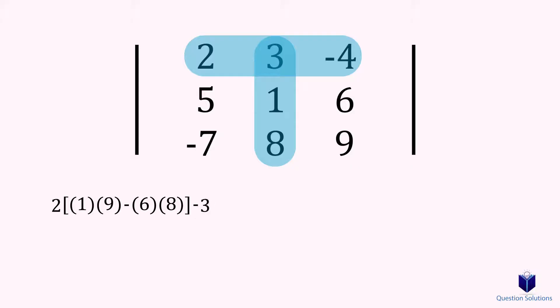As before, we are left with 4 numbers that we will cross multiply. First, 5 by 9, and then the value of 6 by negative 7 is subtracted.